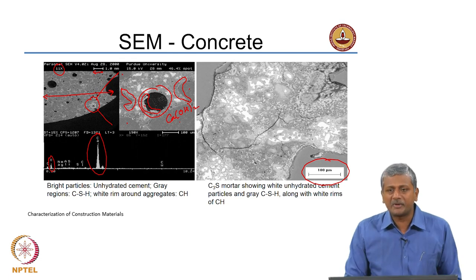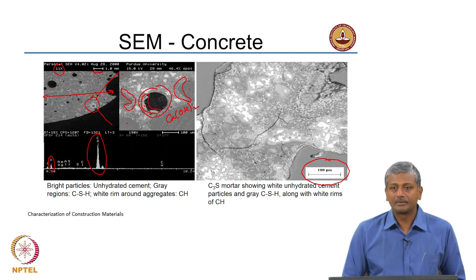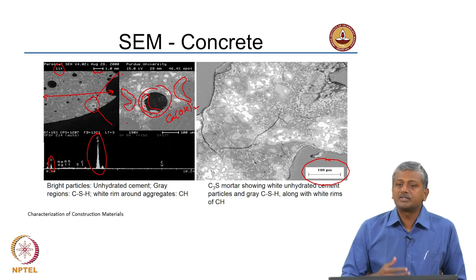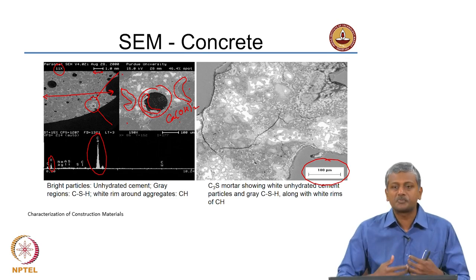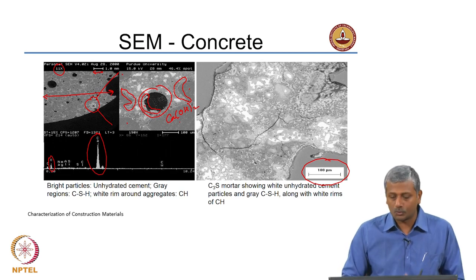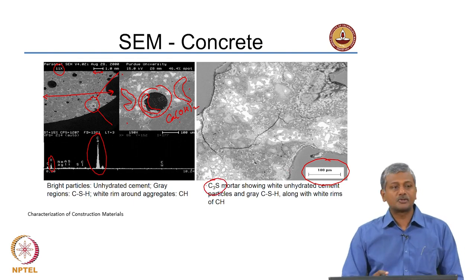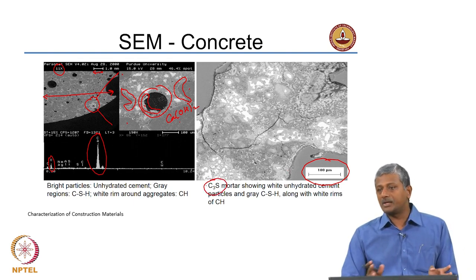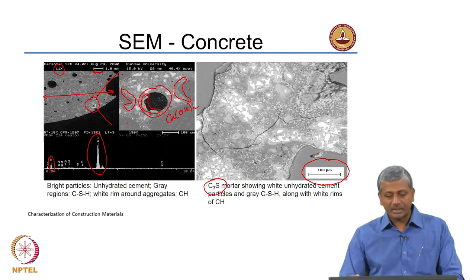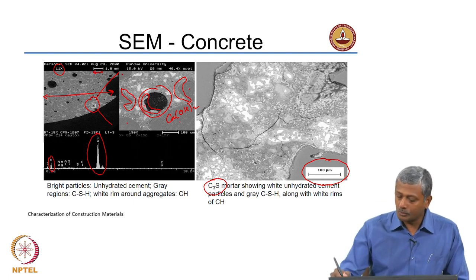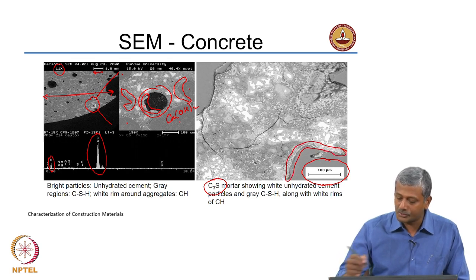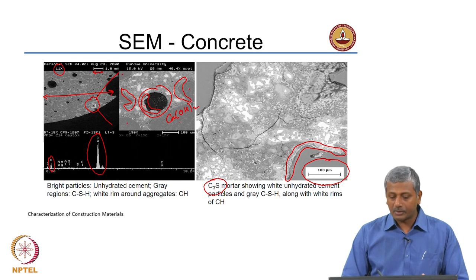Why does calcium hydroxide want to grow in that space? Because of what happens in the interfacial transition zone — there is much larger porosity available at the ITZ, so there is more space for crystalline material to grow. The image on the right is taken from a C3S mortar, meaning there are no aluminate phases. You only have C3S reacting with water to produce cementitious hydrates. Note the level of light grey around the aggregate — that is your calcium hydroxide.